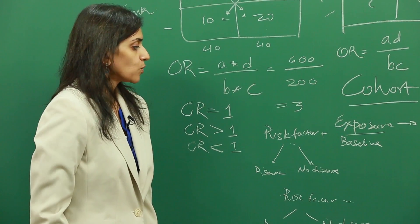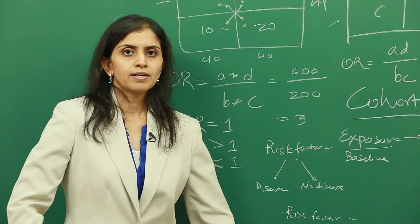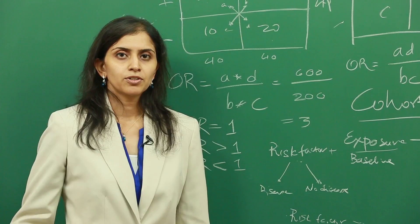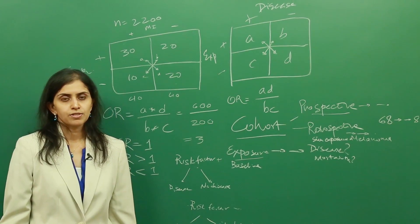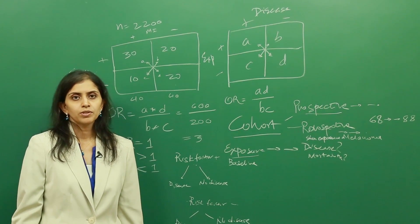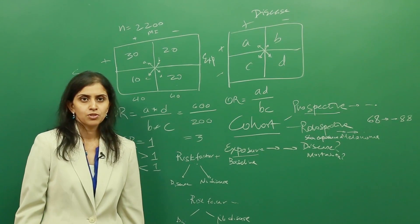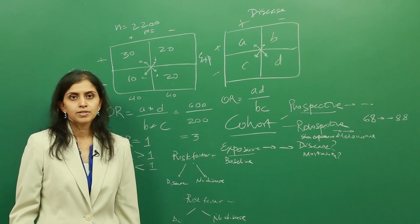Some of the elements of cohort studies are selection of the study subjects. Again, just like the case control studies, it's extremely important to determine in your study methodology where these subjects will come from. Obtaining the data on exposures - it's sometimes not the easiest thing to understand what the risk factors are or what the exposures are. So one has to be really careful when trying to do cohort studies.